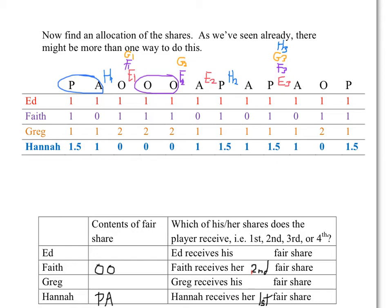We continue scanning left to right from where Faith's share leaves off. We're looking for whose number 3 share appears before anyone else's. Again, we have a tie. Remember that Hannah and Faith are already taken care of. This tie is really just between Greg and Ed.